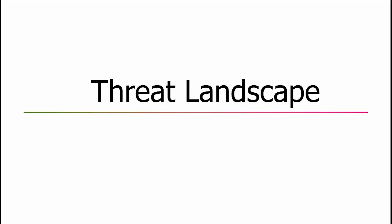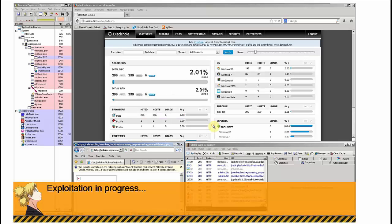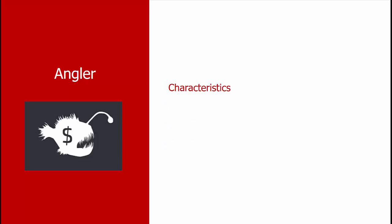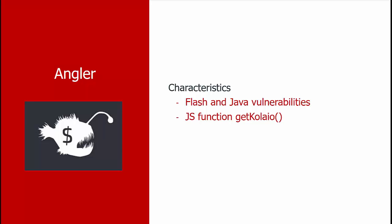Let's take a look at the threat landscape and the types of exploit kits we're talking about. One of the original exploit kits is called Black Hole. As a renter of an exploit kit, you receive an account, log in, and are able to see statistics about the types of browsers getting infected, operating systems being affected, and the particular payloads actually working. Exploit kits of recent days include Angler, Rig, Nuclear, and Neutrino. Angler is no longer available due to key incarcerations, but its main characteristics included targeting Flash and Java vulnerabilities, as well as a JavaScript function called getcola.io that always appeared in the de-obfuscated code.